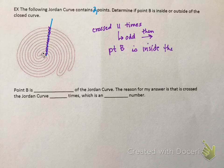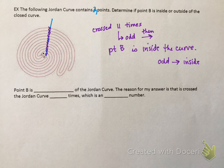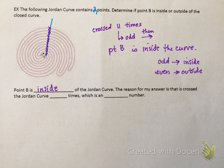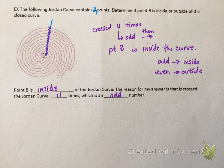If the line crosses an even number of times, the point is outside the curve. To summarize: odd crossings means the point is inside; even crossings means the point is outside. So point B is inside the Jordan curve because the line crosses the curve eleven times, which is an odd number. That is the end of this section — remember to watch all three videos inside the notes to understand the material and fill out your notes for full credit.